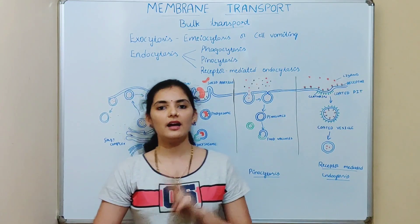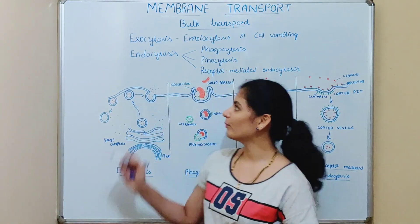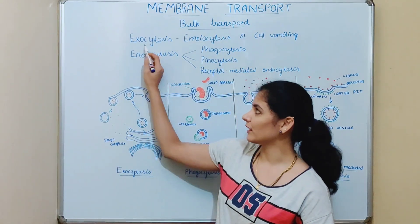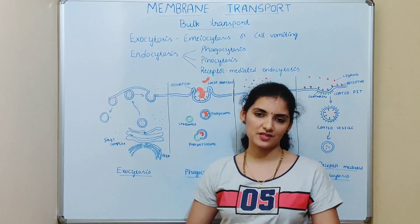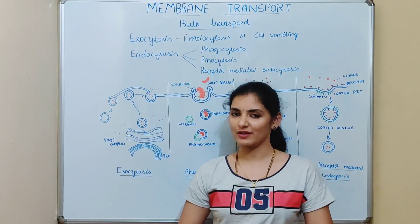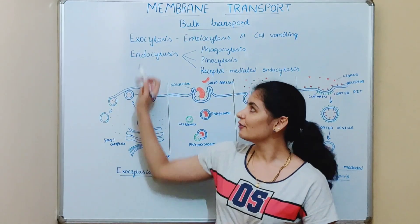There are mainly two types of bulk transport: exocytosis and endocytosis. We will discuss them one by one.